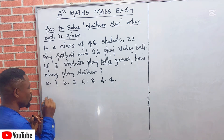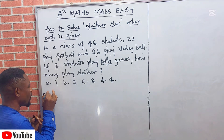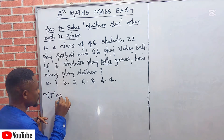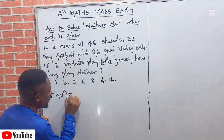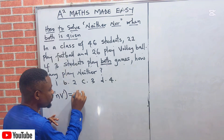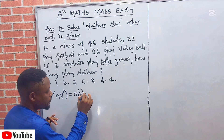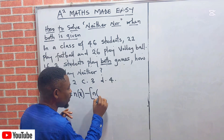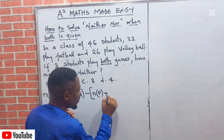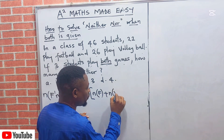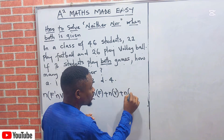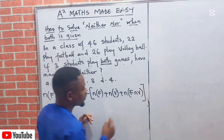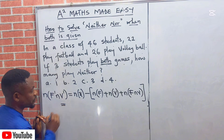Now if three students play both games — so the intersection is given as 3 — the question asks: how many play neither? We are looking for those that did not play football and those that did not play volleyball. The formula is: the number that played neither equals the universal set minus, in brackets, the number that played football only, plus the number that played volleyball only, plus the number that played both football and volleyball.